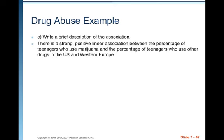Write a brief description of the association: There is a strong positive linear association between the percentage of teenagers who use marijuana and the percentage of teenagers who use other drugs in the U.S. and Western Europe. Anything close to positive or negative 1 indicates a strong linear association.